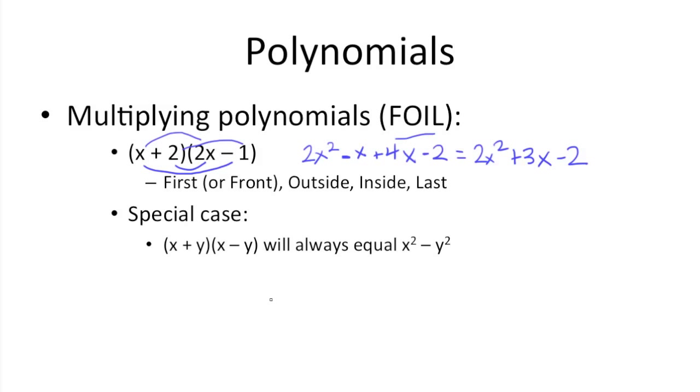There are certain special cases when you multiply polynomials together where it's a little more straightforward. When you have like terms, x plus y times x minus y, you'll always get x squared minus y squared. That's because you'll multiply the x's together. You get x squared, multiply x times y, negative xy, y times x, which is xy, and y times y here, negative y squared. So the negative xy and the positive xy in the middle will always cancel, which will leave you x squared minus y squared.